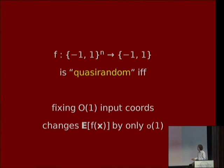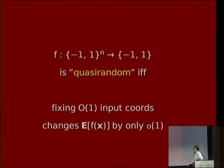No matter how you fix a constant number of the input coordinates, it doesn't change the bias or the expectation of f by that much. Every time in this talk, when I say expectation, I would mean with respect to a uniformly random chosen string x from minus one, one to the n. I'll use boldface for random variables. This is the average of f's values, and you can't change it by more than little-o of one by forcing some input coordinates to be constant.